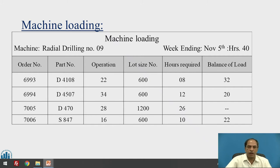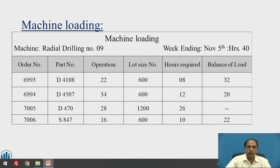A simple example of machine loading on a conventional drilling machine — say radial drilling machine number 9 — shows that for the week ending November 5th, total hours available are 40 hours (a five-day week at eight hours per day). The chart lists order numbers, part numbers, operation numbers, quantities to manufacture, total hours required, and the balance load for each order. All orders are tabulated to show the total load and balance of load available for that machine in a clear, order-wise format.